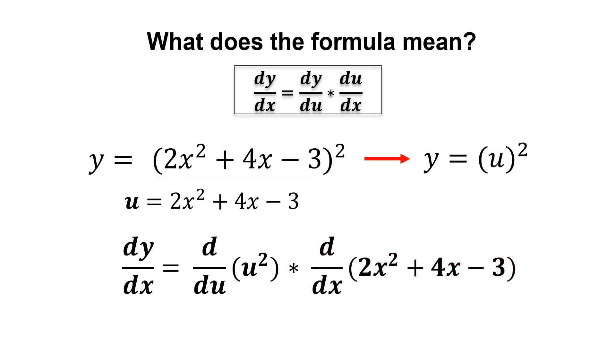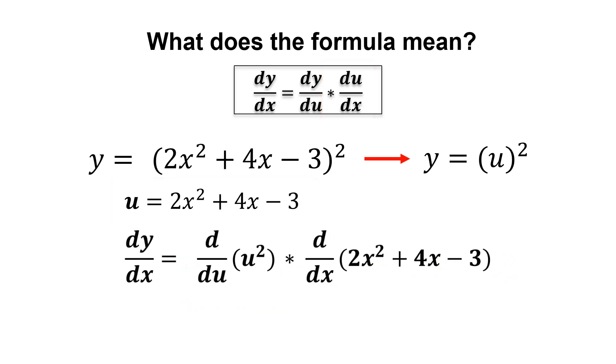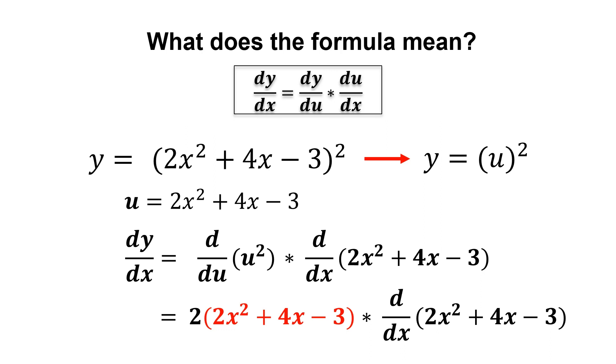Taking the derivative of u squared, obviously we will be getting 2u, and remember that u is our inner function, so we replace it with 2x squared plus 4x minus 3. In other words, we first differentiate the whole function by just using the basic power rule without changing anything for the inner function. That's the reason why we got this.